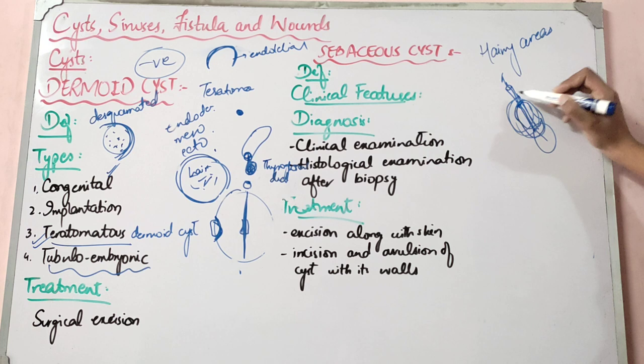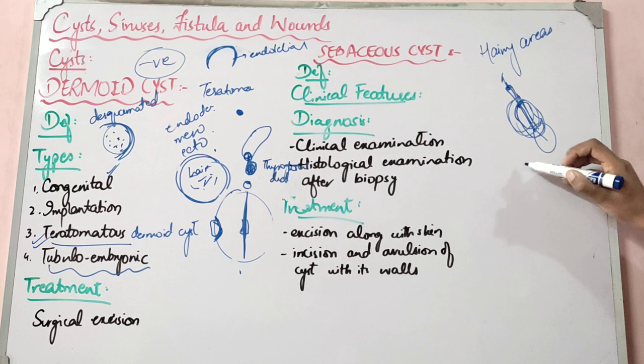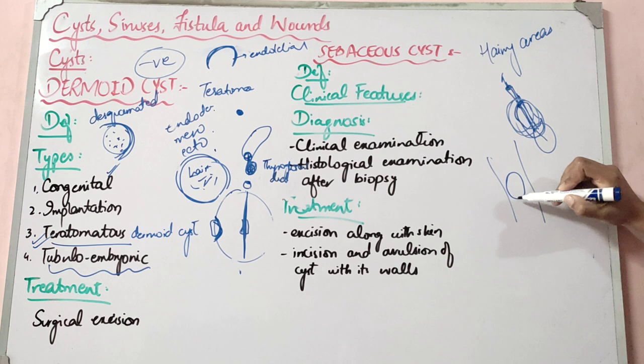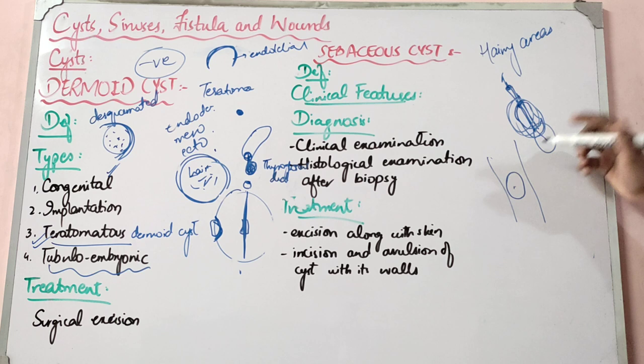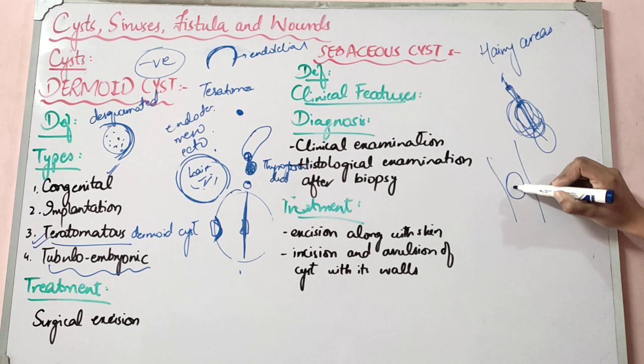When the sebaceous gland duct is blocked, a prominent punctum is visible on examination of the cyst — for example in the axillary area a small punctum can be seen from which sebum exits. The obstruction causes sebum to accumulate. Clinical features include skin-colored swelling. Infection can occur. Diagnosis is clinical. Some patients require biopsy and histological examination when malignancy is suspected. Infection is a common complication.